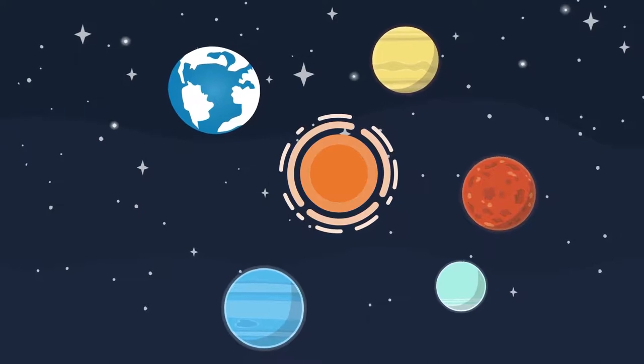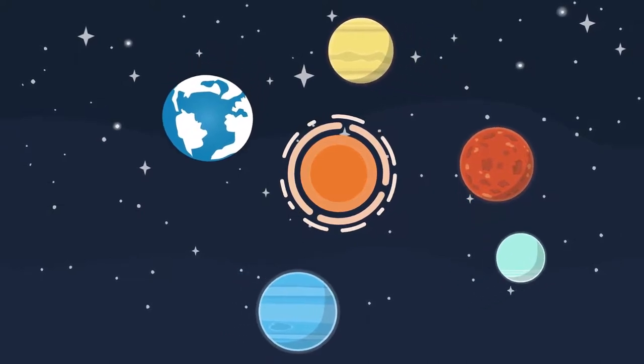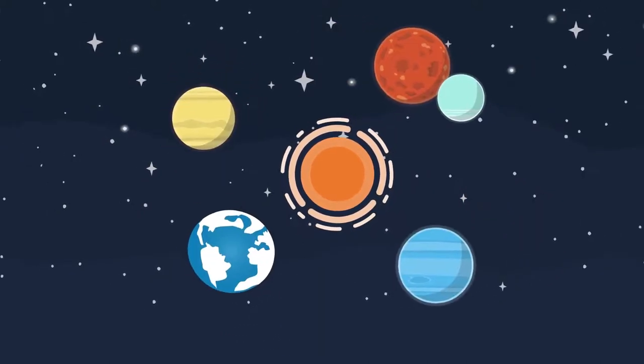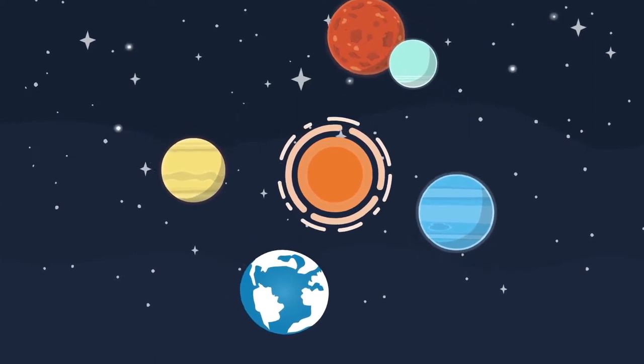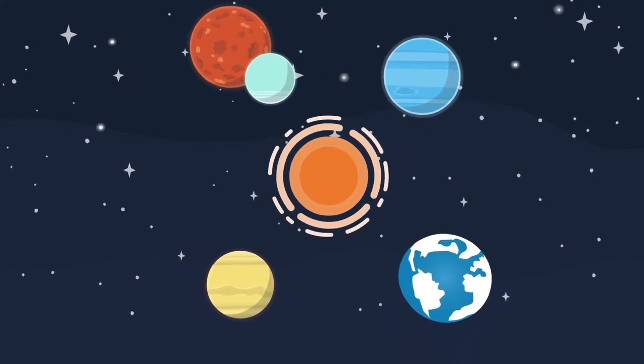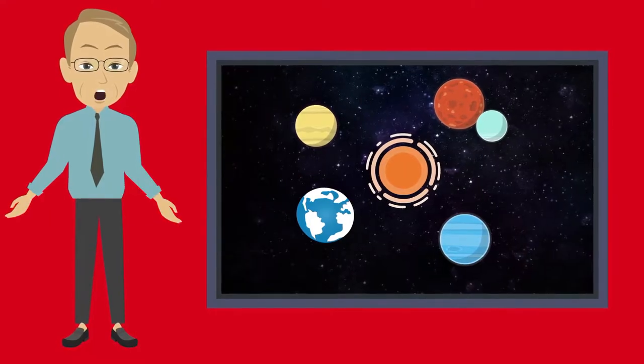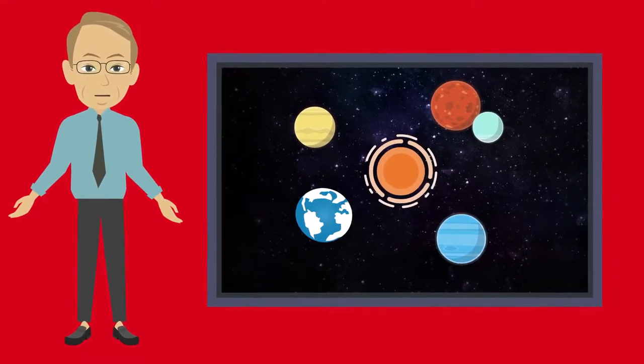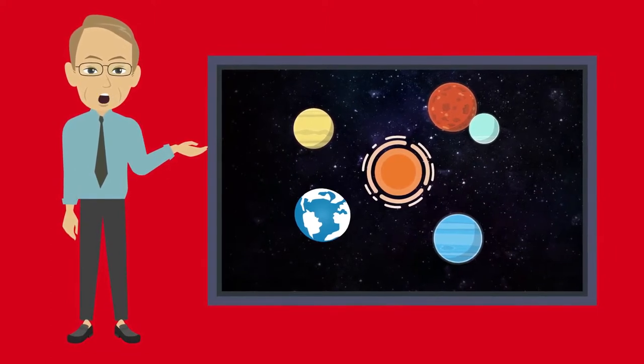Gravity keeps the planets in order around the Sun, but it also attracts the planets to each other. Although much smaller than the Sun's pull, these forces between planets tweak their orbits over millions of years, making them flex and drift. It's possible that these flexing orbits could cause the solar system to destabilize and eject planets, including Earth.